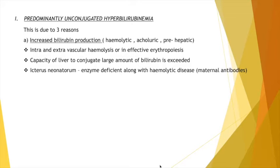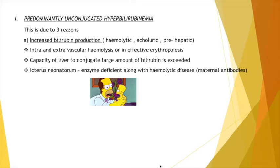The next case is icterus neonatorum. In newborn premature infants, the liver is underdeveloped, so there will be a deficiency of the enzyme necessary for conjugation. At the same time, the rate of red cell destruction is also high. This results in icterus neonatorum — jaundice of the newborn — when there is deficiency of the conjugating enzyme along with hemolytic disease causing high red cell destruction.